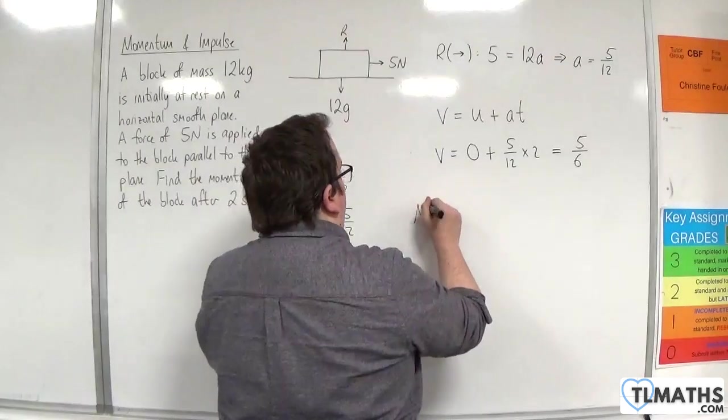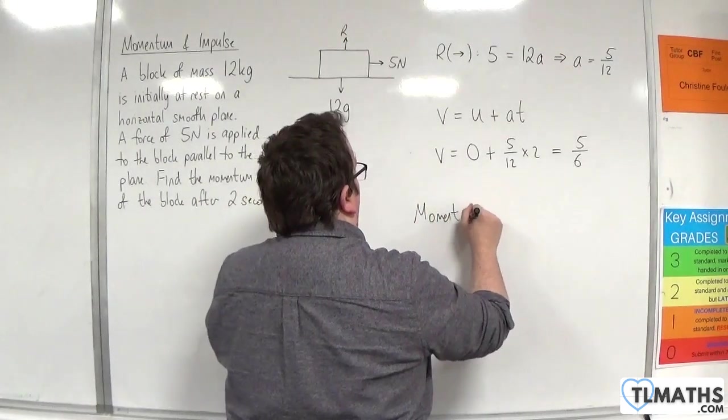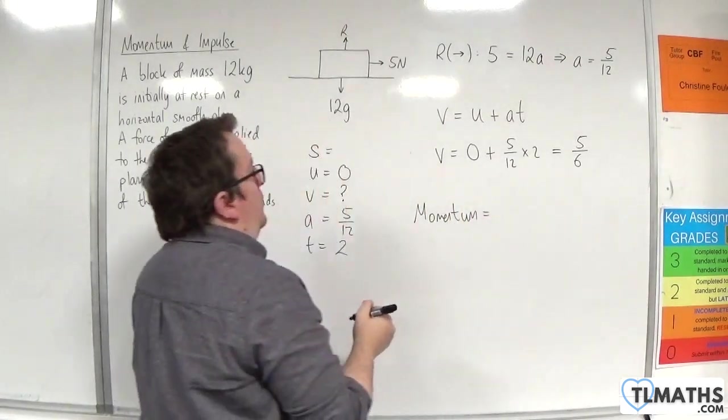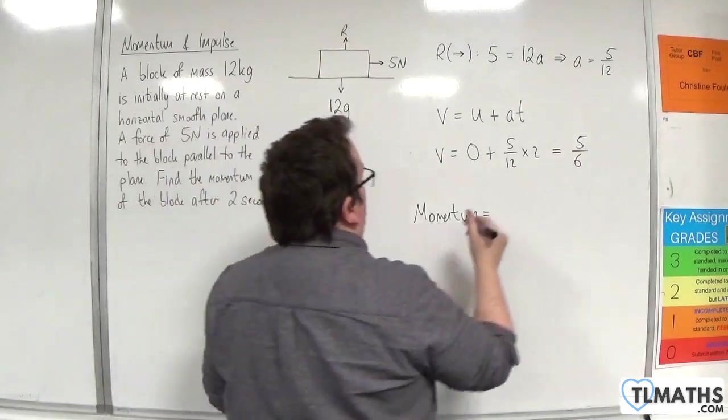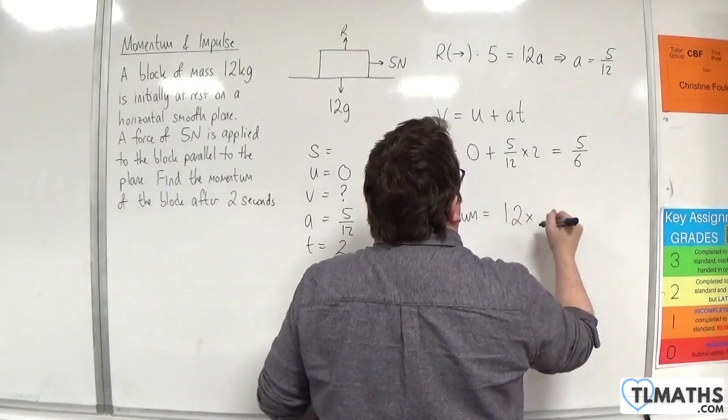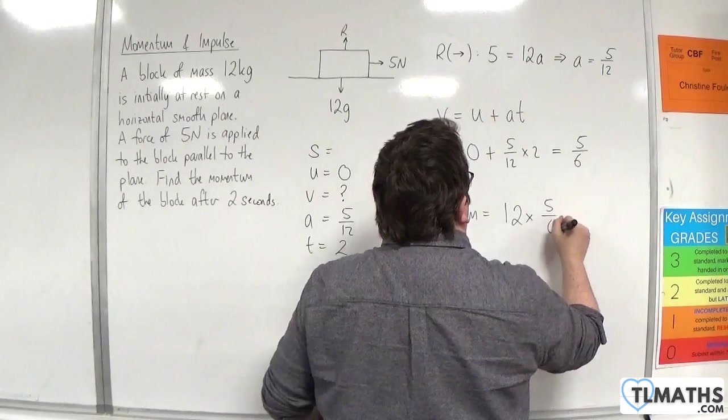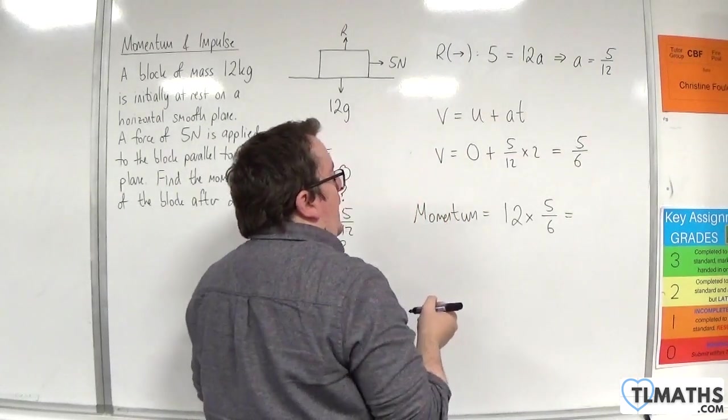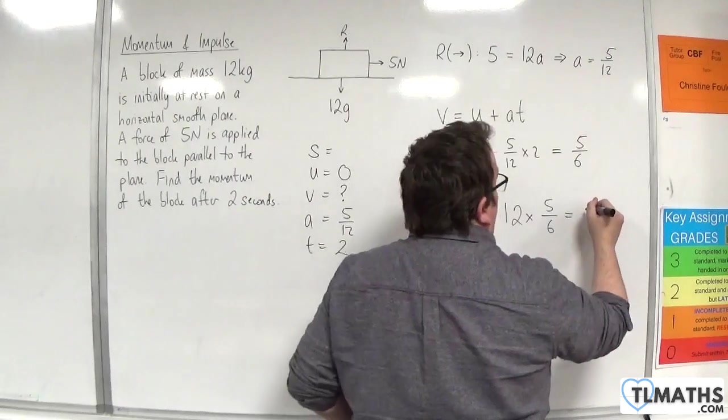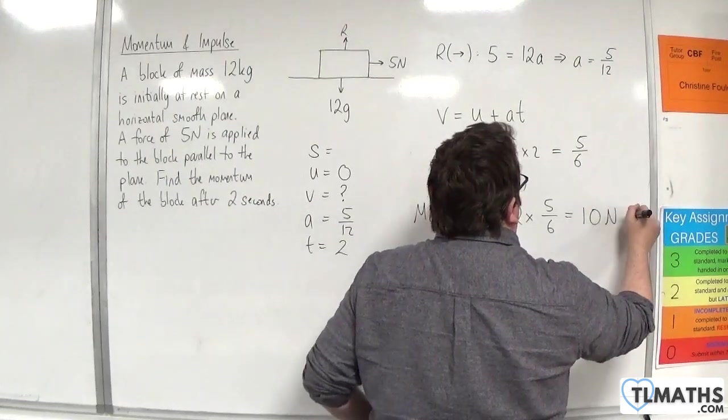So, the momentum will be equal to the mass, which is 12, times by the velocity, 5 sixths. And that's going to be equal to 10, and that's newton seconds.